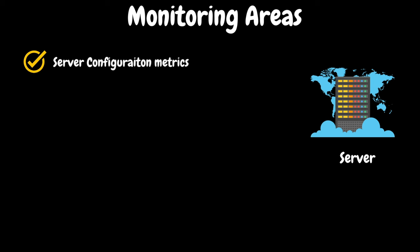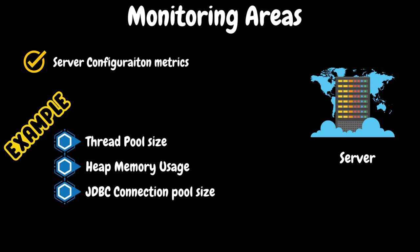We can monitor the server configuration metrics using APM tools. For example, in a three-tier architecture developed in Java technology, we can monitor thread pool size, heap memory usage, JDBC connection pool size, and other related metrics.